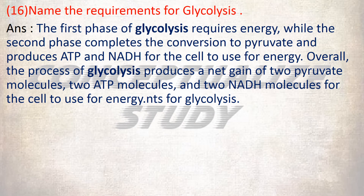Name the requirements for glycolysis. The first phase of glycolysis requires energy, while the second phase completes the conversion to pyruvate and produces ATP and NADH for the cell to use for energy. Overall, the process of glycolysis produces a net gain of two pyruvate molecules, two ATP molecules, and two NADH molecules.